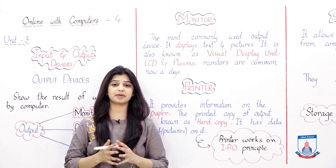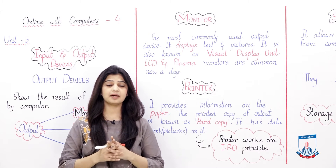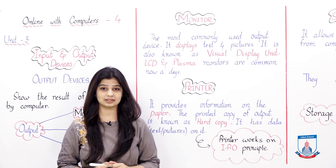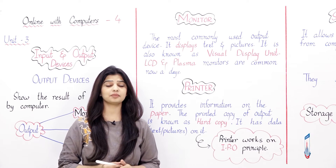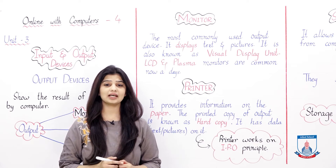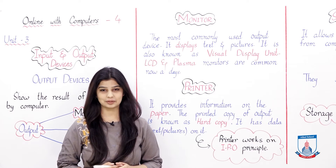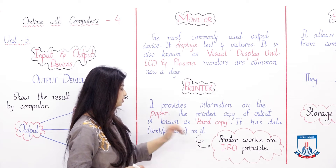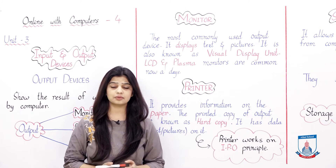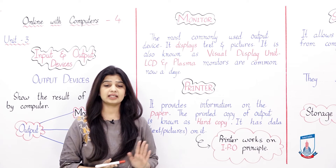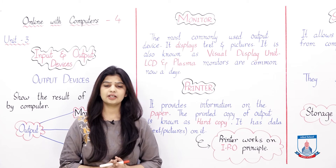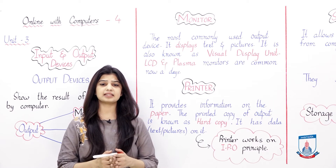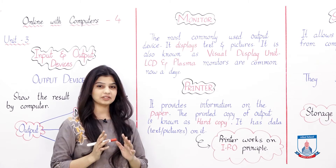What do we call the paper printed by the printer? We call it a hard copy. Why do we call it hard copy? Because it has data, text, pictures, and figures on it. These are the files that we have printed.